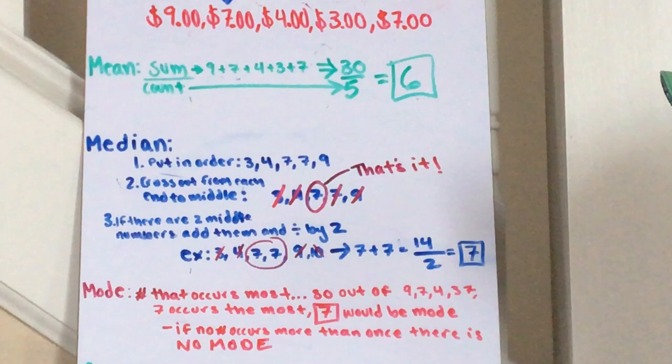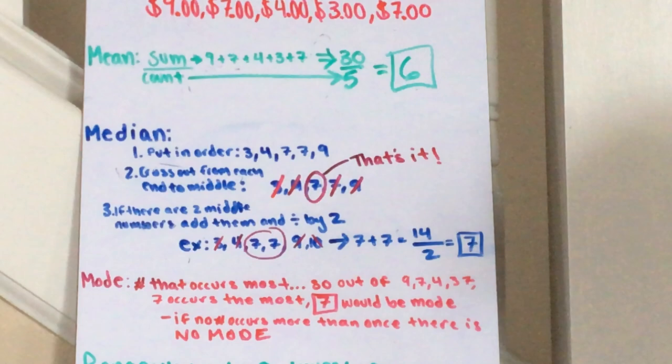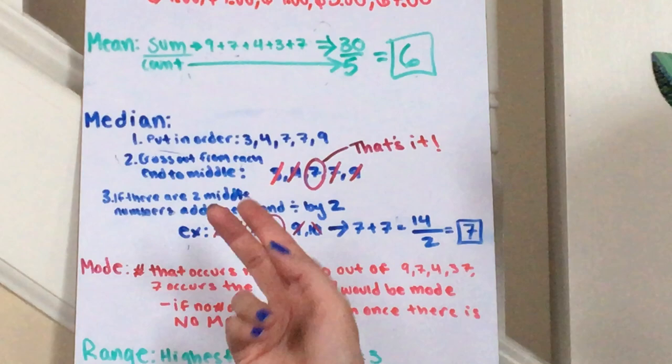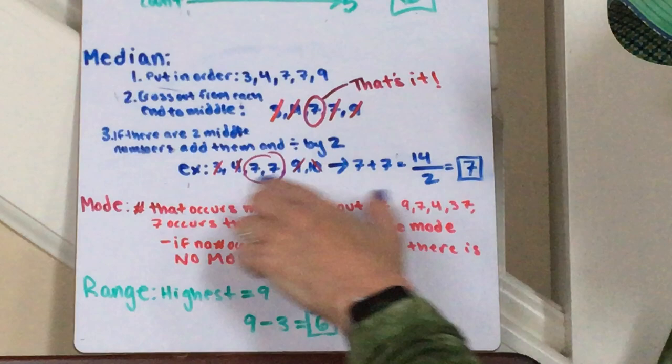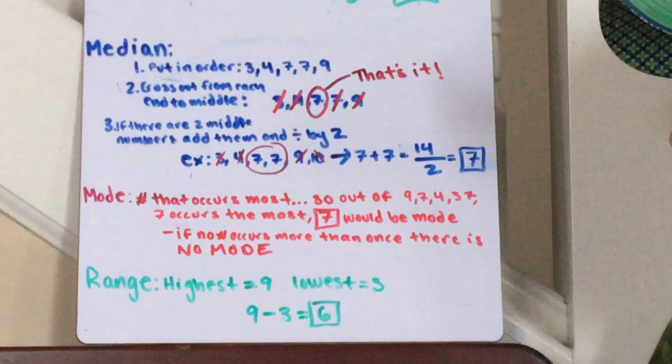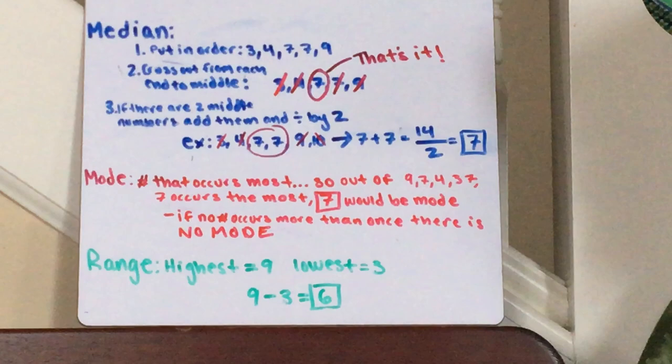Cross them out from end to end. Boom, seven is the median. If there were another donation or another pledge, let's pretend it was ten dollars. Put them in numerical order. There's going to be two middle numbers which are both seven, and then you have to find the mean of that. Seven plus seven divided by two is seven.